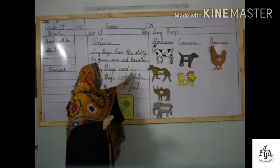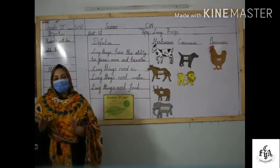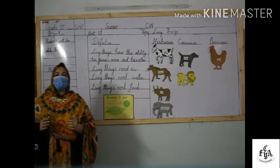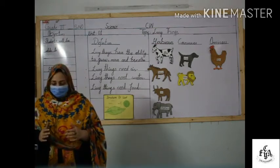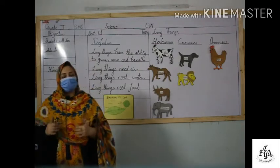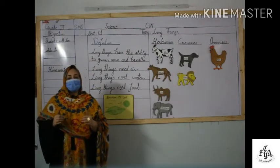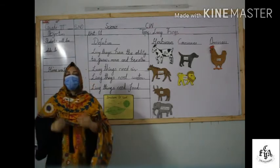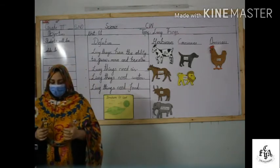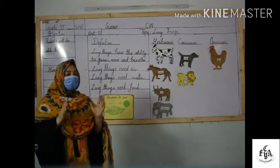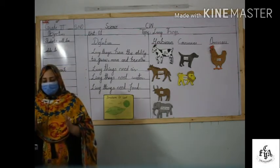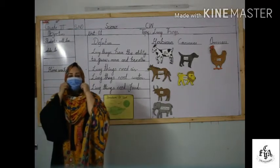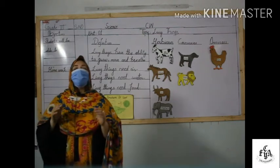Number one: living things need air. All living things need air. When we breathe in, we take in oxygen into our body. Taking oxygen into our body is called breathing. Fish also breathe through their gills. Animals that live on land take air into their lungs.